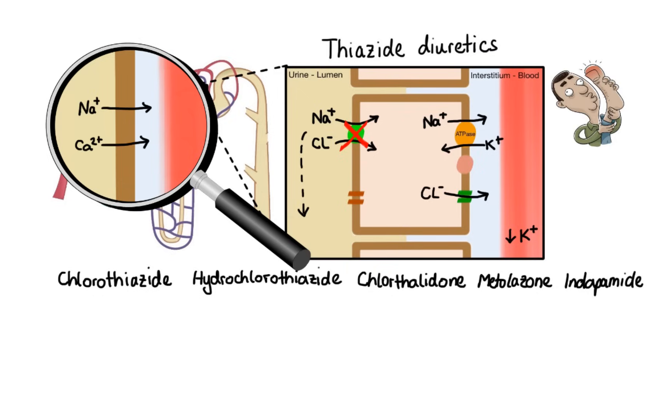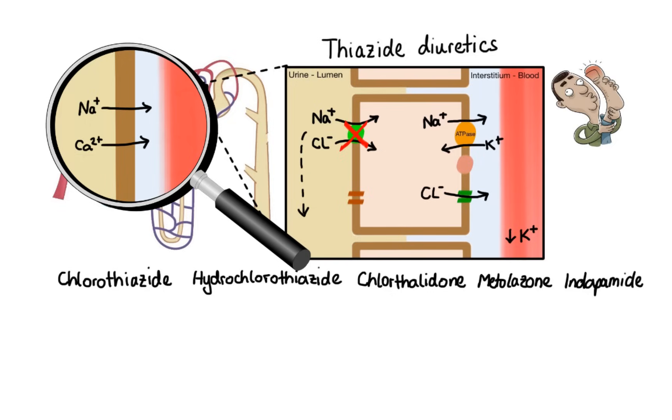The second mechanism involves the sodium-calcium exchanger located on the basolateral side of the distal tubule. Because thiazides block sodium chloride cotransporter, there will be decreased concentration of sodium inside a cell, which then in turn causes the sodium-calcium exchanger to bring in more sodium in exchange for calcium, which is then excreted into the bloodstream.